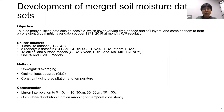For the development of the soil moisture dataset, our objective is to take as many existing datasets as possible and combine those with different time periods and soil layers to form a consistent global multilayer dataset covering 1971 to 2016 at monthly half-degree resolution. Our source datasets include a long-period satellite dataset — the European Space Agency CCI dataset, which starts from 1978 onwards.